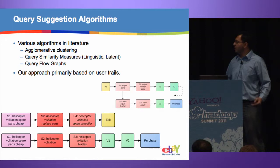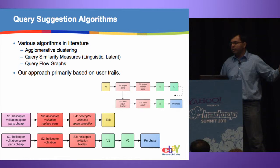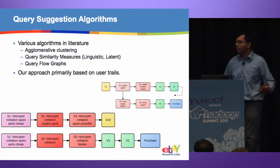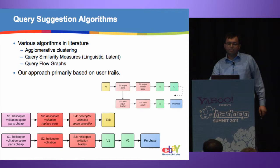The idea is: if query A is usually followed by query B and it leads to success, then B could be a good recommendation for query A.